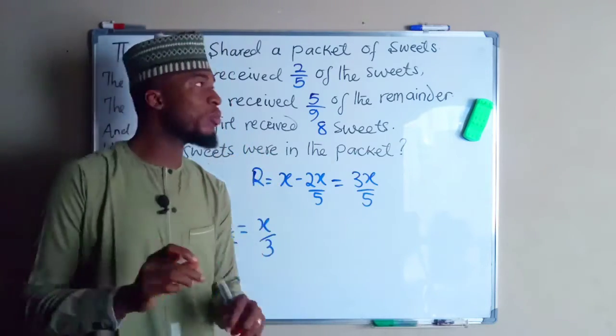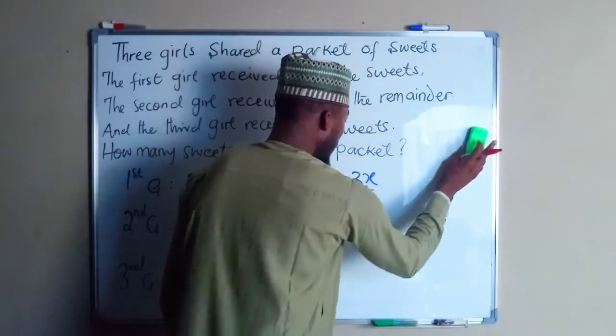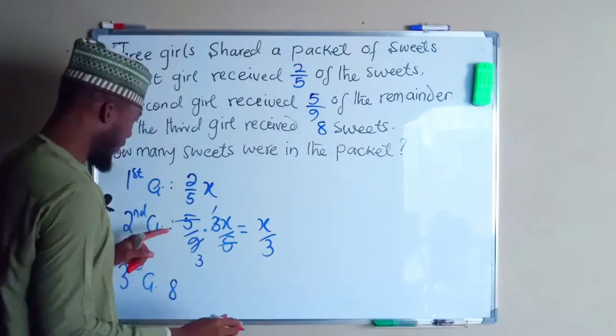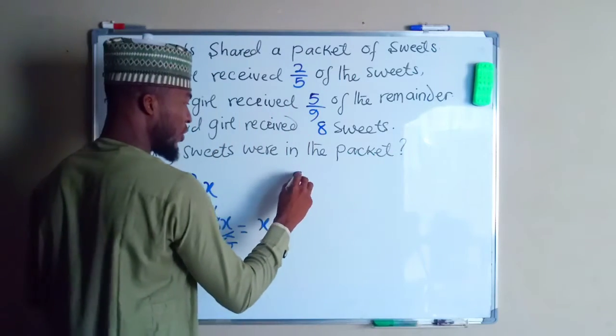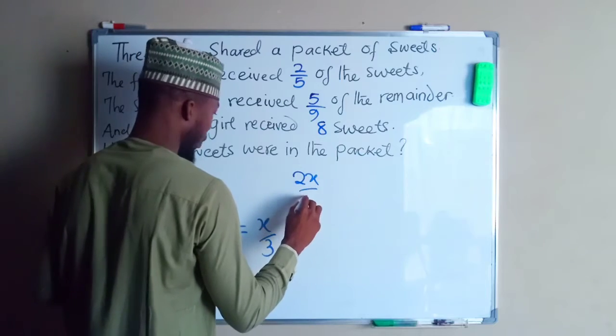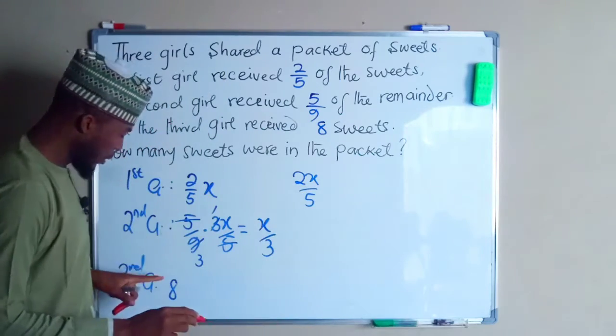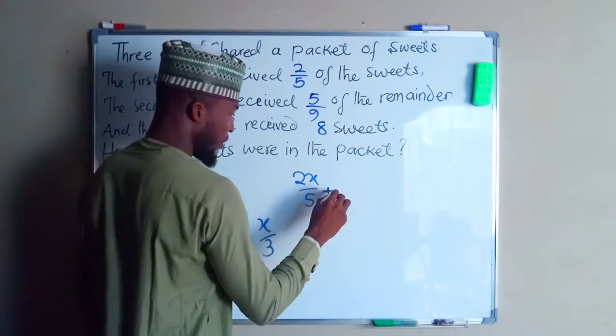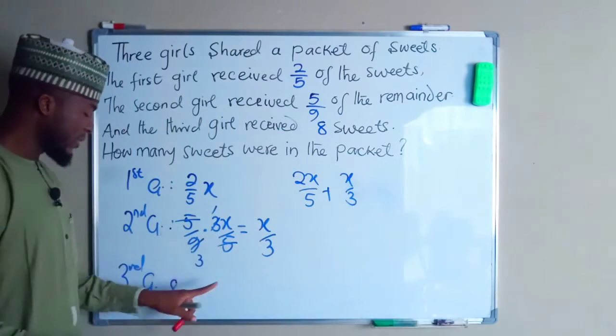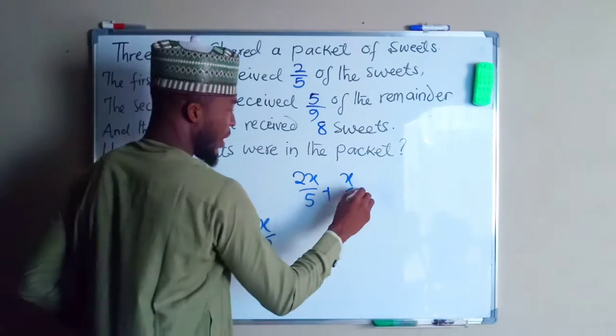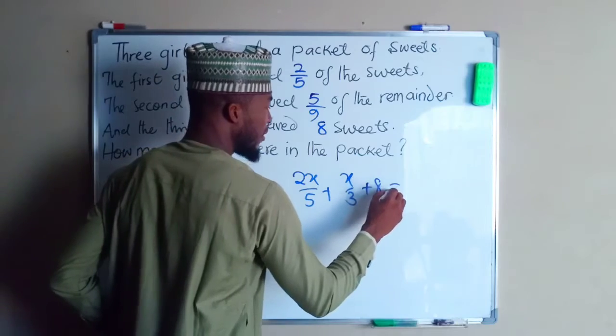So algebraically, we have the first share which is 2X/5, plus the second share which is X/3, plus the last share which is 8. We add all of them together and this will be equal to X.